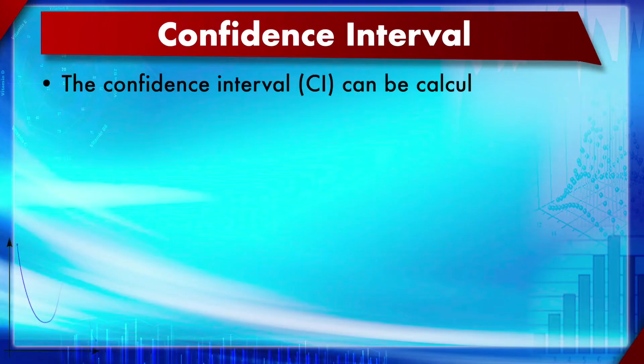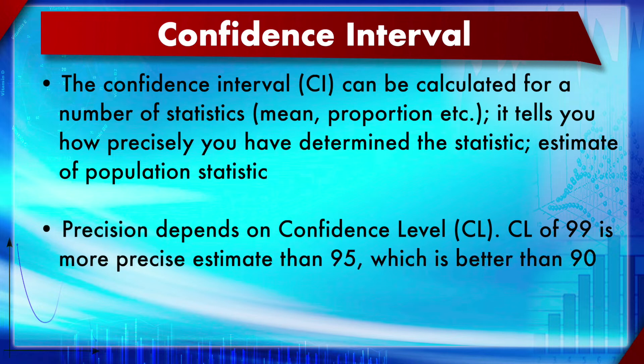Module 11 covers concepts of population, sample, and confidence interval. Section 1 is the theory of confidence interval and confidence interval of the mean. This is a very important module. Confidence intervals can be calculated for a number of statistical measures like mean, proportion, standard deviation, or binomial proportion. It tells you how precisely you have determined the statistic — basically an estimate of the population statistic — and how precisely you have determined the mean compared to the population it came from.